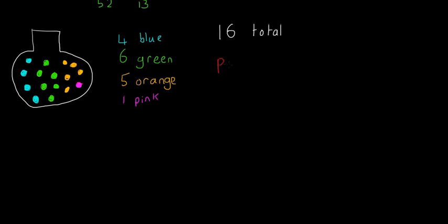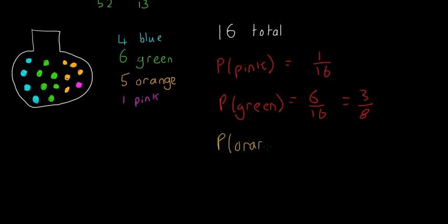For example, the probability of picking a pink button is just going to be the amount of pink over all of the buttons, which is going to be 1 over 16. The probability of a green one is going to be 6 over 16, and if you want you can simplify that down to 3 over 8. The last example, the probability of picking an orange button, is just going to be 5 over 16. So it's simple enough.